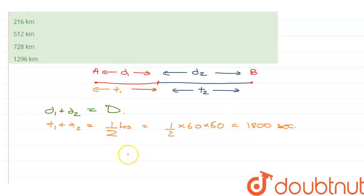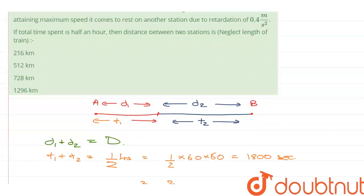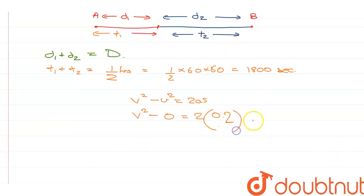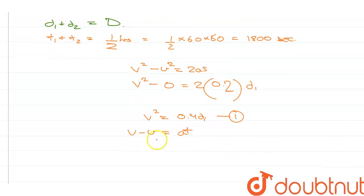Now, if I write the equation for this first half of the journey, if I use V square minus U square is equal to 2AS, that becomes V square minus initial velocity here will be 0 is equal to 2 into the acceleration is 0.2 into distance D1. So, V square is equal to 0.4 D1. This is equation number 1. And V minus U is equal to AT. So, V minus U will be again 0. This is equal to acceleration is 0.2 and the time is T1. So, V is equal to 0.2 T1. This is equation number 2.